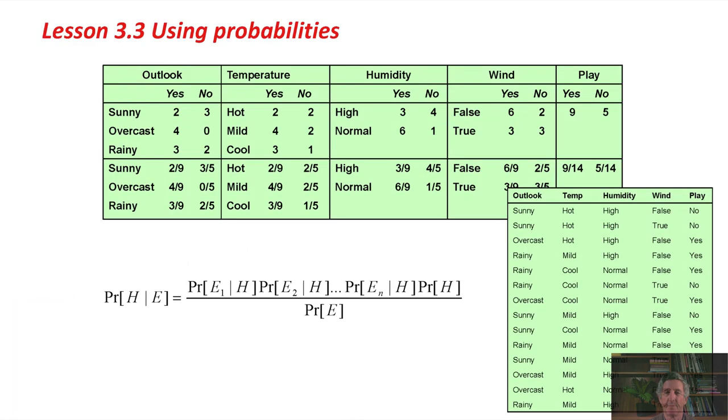That's maybe a bit abstract. Let's look at the actual weather data. Here it is, on the right-hand side, the weather data. In the large table at the top, we've taken each of the attributes. Start with Outlook, and we've looked at, under the Yes hypothesis and the No hypothesis, how many times the Outlook is sunny. It's sunny twice under Yes and three times under No. That comes straight from the data in the table.